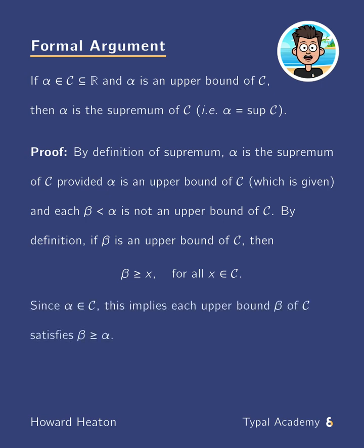We follow this with, since alpha is in C, this implies each upper bound beta of C satisfies beta is greater than or equal to alpha.